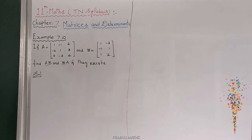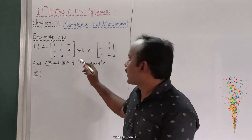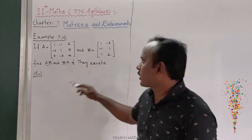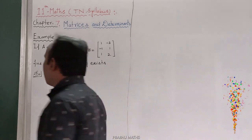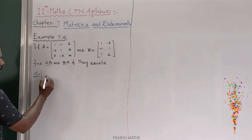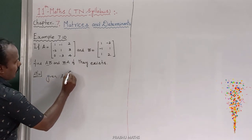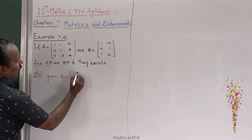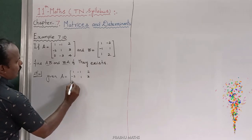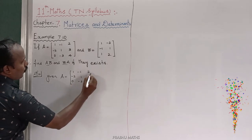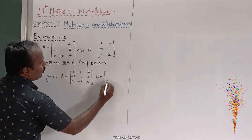Example 7.10: If A is equal to the 3 by 3 matrix and B is equal to a 3 by 2 matrix, find A times B and B times A. The given first matrix A is equal to: 1, minus 1, 2; next minus 2, 1, 3; next 0, minus 3, 4. That is the A matrix.